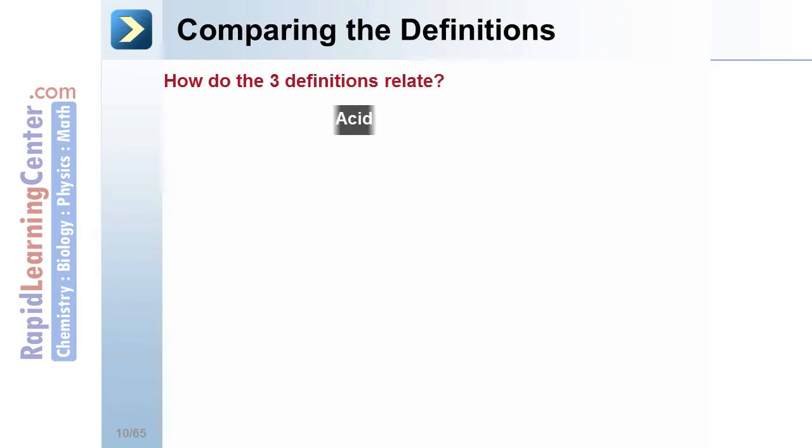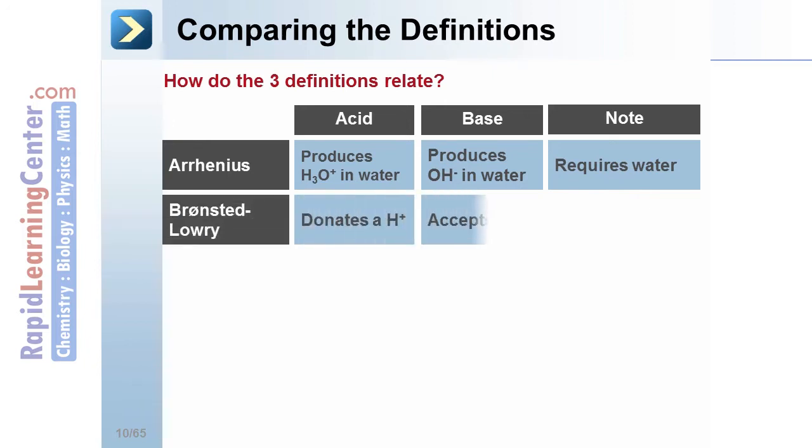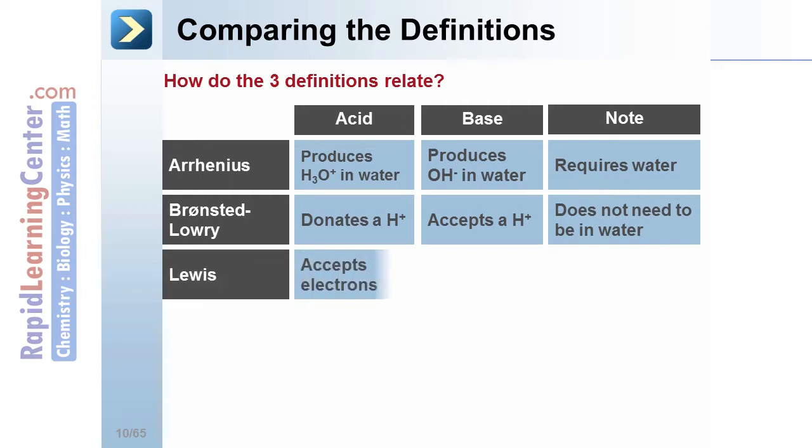How are the three definitions for acid and base related? The Arrhenius definition means that an acid produces H3O plus 1 in water and a base produces OH-1 in water. Arrhenius acids require water. Bronsted-Lowry acids and bases donate or accept an H plus 1. This definition does not require the presence of water.